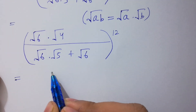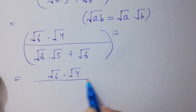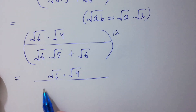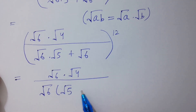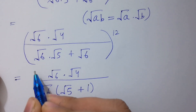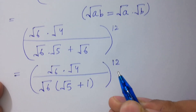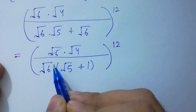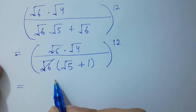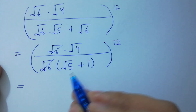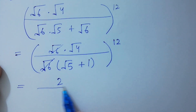Square root of 6 times square root of 4, over square root of 6 — square root of 6 is common, giving square root of 5 plus 1, to the whole power 12. Next, square root of 6 and square root of 6 will be cancelled.